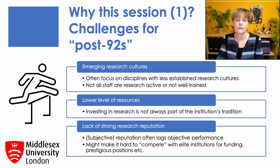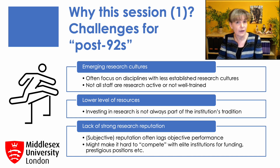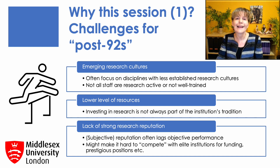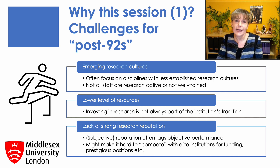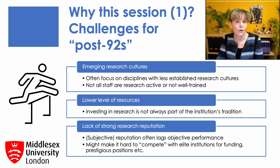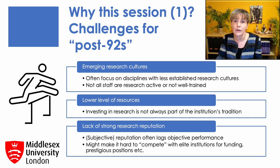At the same time they maintain their emphasis on caring for students and external engagement, so we could in fact call them triple intensives, focusing on research, teaching and external engagement equally. But part of the problem in triple-intensive universities is that investment in research is not always part of the university's tradition and staff have access to fewer resources. The biggest problem for triple intensives is the lack of a strong research reputation, and even if they're performing very well on objective metrics such as publications, citations and research funding, their external reputation often lags behind this objective performance.